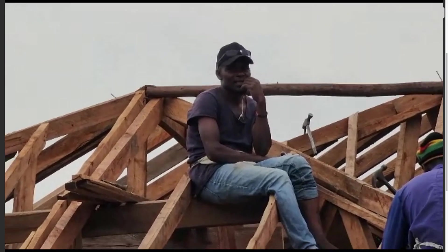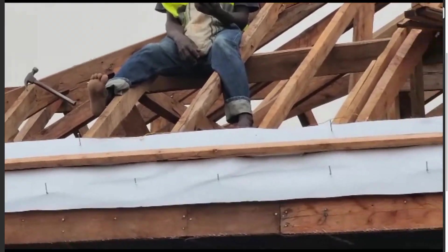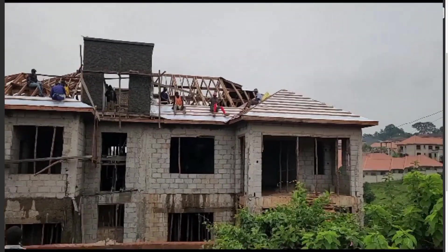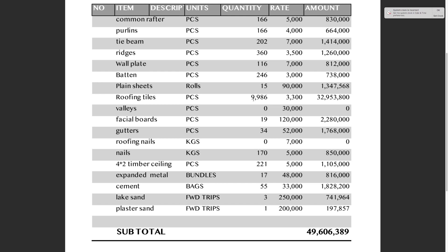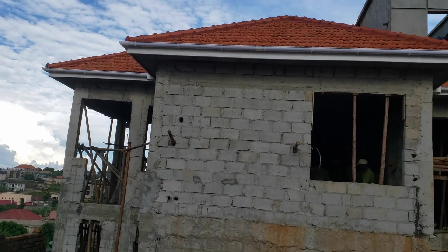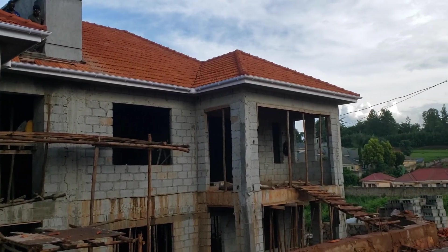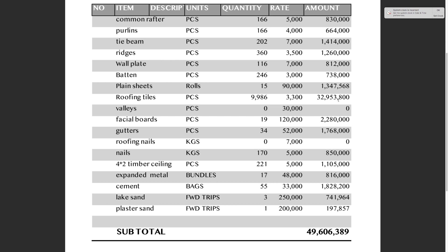Plane sheets — we bought 15 rolls at 90,000 shillings each, costing us 1,347,500 shillings. Roofing tiles — we bought 9,986 pieces, including those that get broken during installation. Each piece is at 3,300 shillings, costing us 32,953,800 shillings.